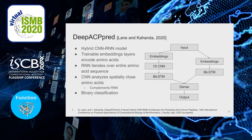Our proposed method is a hybrid convolutional neural network recurrent neural network model. It uses trainable embedding layers to encode amino acids as vectors. The RNN iterates over the entire amino acid sequence, while the convolutional neural network analyzes spatially close amino acids. We believe that these two structures complement each other. Ultimately, this is a binary classification problem, so the output of the model is a 0 or a 1, depending on whether or not the neural network believes the input sequence represents an anticancer peptide.